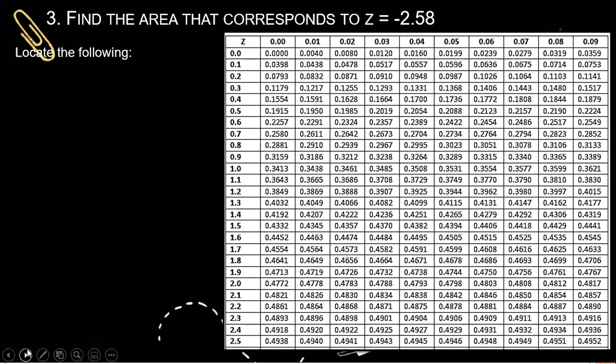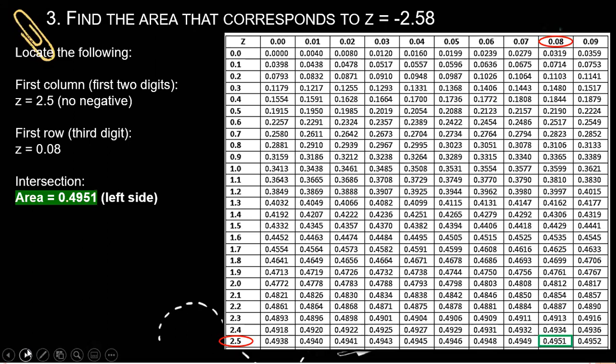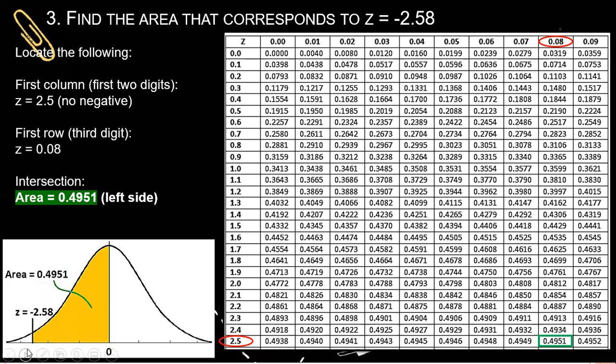Next, we locate the following. First, we get the first two digits. So we disregard first the negative sign. So that is 2.5. And then get the first row or third digit, 0.08. So the intersection is 0.4951. But since our Z-score is negative, so the shaded part is to the left.